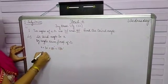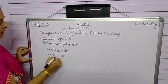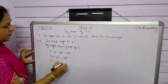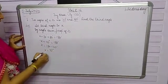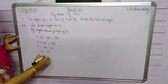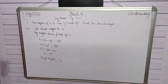30 plus 80 is 110, and 110 will go to that side and will be subtracted. So the third angle here comes out to be 70 degrees. The third unknown angle is equal to 70 degrees.